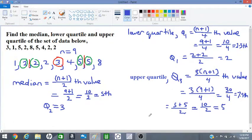And that is our value for Q₃. The upper quartile equals 5. That is how we find quartiles of an odd set of data. Thanks for watching, and all the best to you.